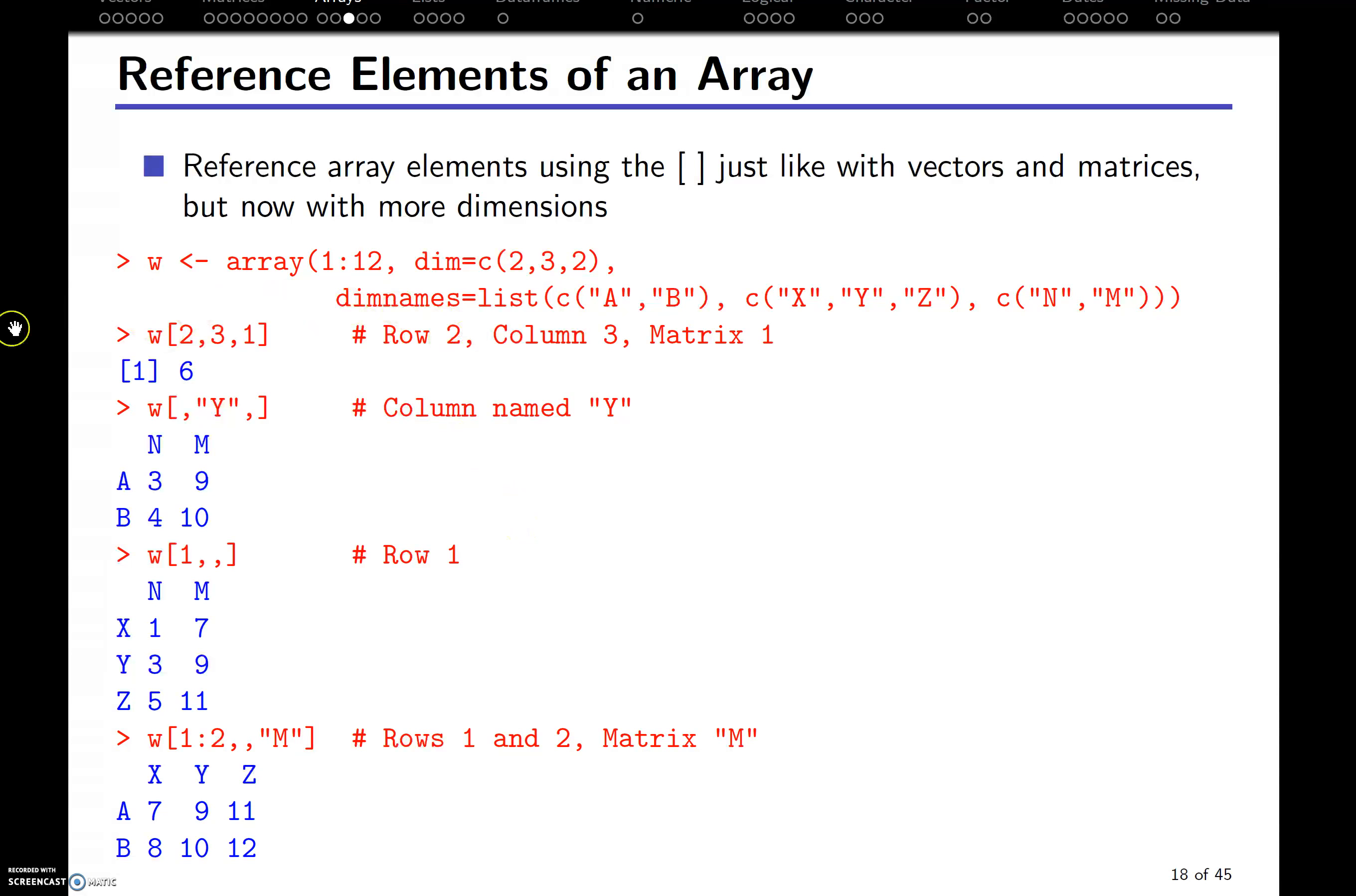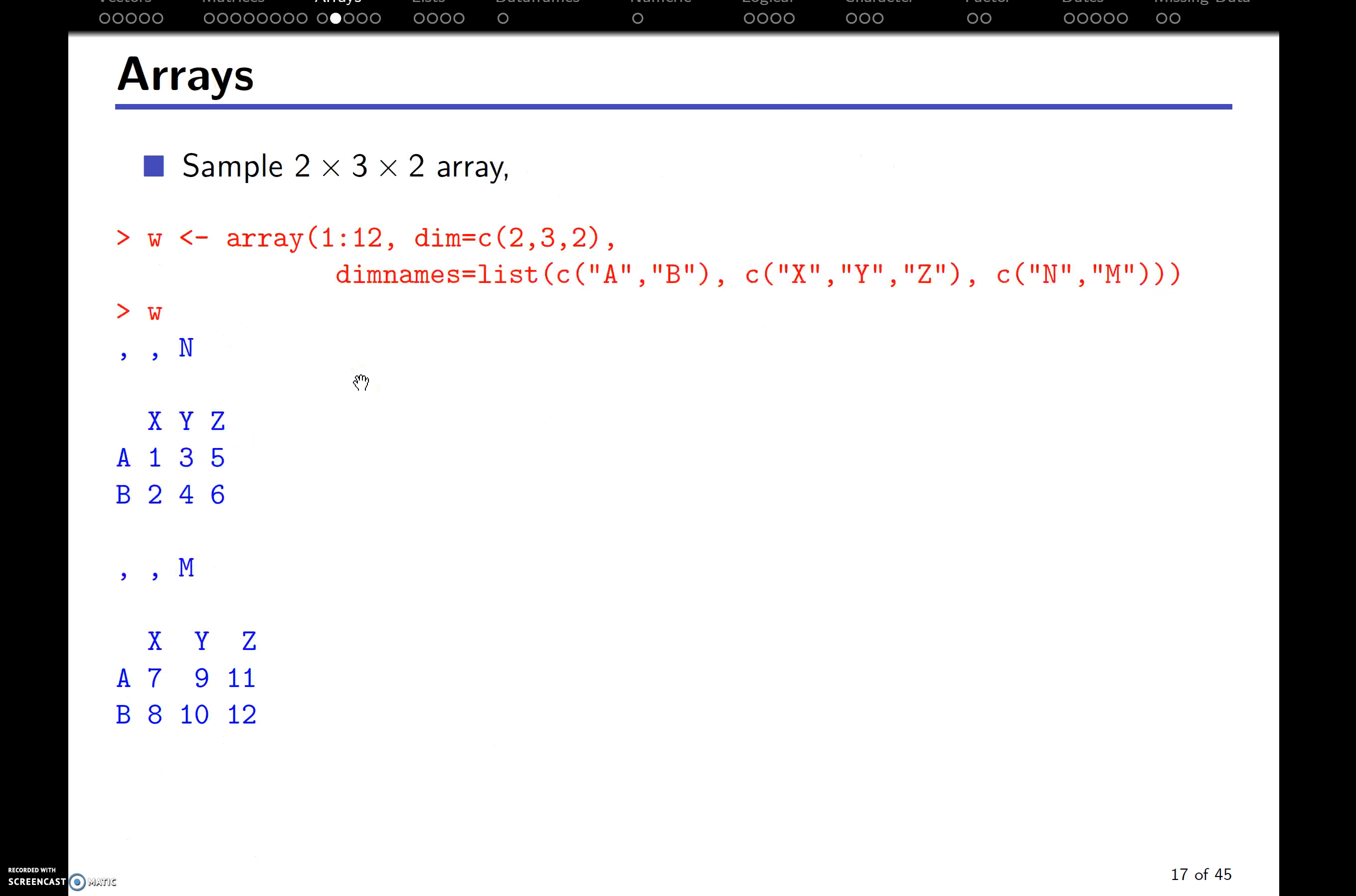We can reference, just like I just talked about, we can reference these. The second row, third column, first matrix, well, here that would be N. I'll go backwards here, third column would be Z, second row would be B, and we get back a 6. Well, does that make sense? Let's go back and look. Yes, right there. We're in the N, the Z, and the B.